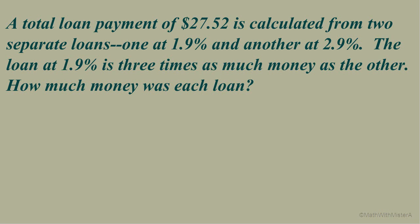Our next example is worded a little bit differently, but it's the same idea. This time we're looking at two loan amounts that have an interest rate. Same idea as savings accounts. A total loan payment of $27.52, basically what we used to call the interest. Now it's still interest, but now on a loan. It's calculated from two separate loans. One is at 1.9%, another is at 2.9%. The loan at 1.9% is three times as much money as the other. How much money is in each loan?